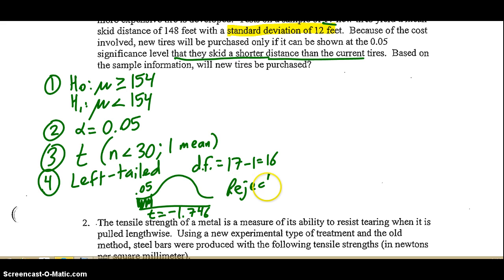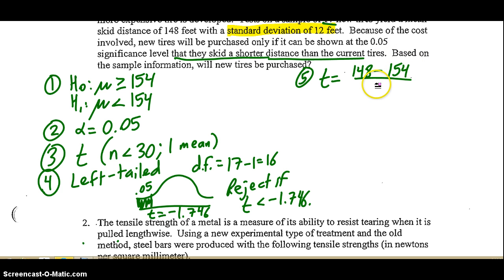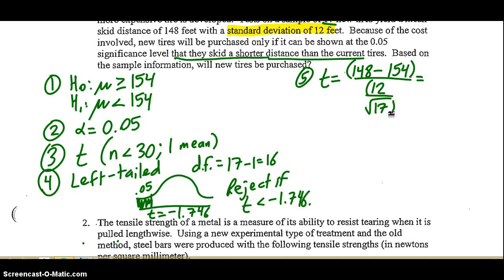We are going to reject if our t-value is less than negative 1.746. Step five: calculate our t-score. T is pretty simple for a one-mean test. It's your sample mean, which is 148, minus your population mean, which is 154, all over the standard deviation of 12, divided by the square root of n, which is 17. Please be careful — make sure you don't use degrees of freedom accidentally; it is the sample size. You can punch this all in your calculator using parentheses very liberally, and you end up with negative 2.062.